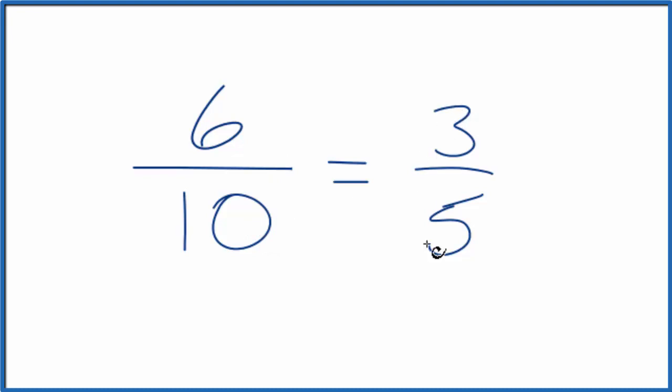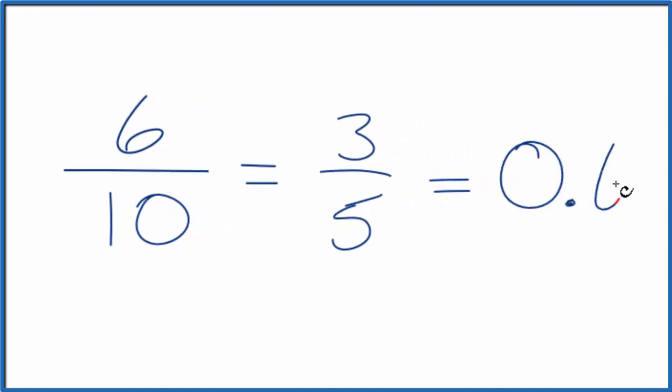So 6/10 and 3/5, they're equivalent fractions. It doesn't matter too much for figuring out the decimal, but good to know. If we type 6 divided by 10, or 3 divided by 5 in our calculator, we'll end up with 0.6.